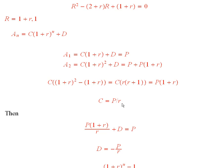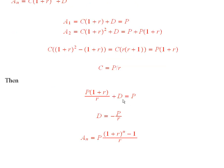So now we can go back up to this equation here. And wherever we see a c, we can put a p over r. So I have a p over r times 1 plus r plus d equal to p. And that implies that d is equal to minus p over r.